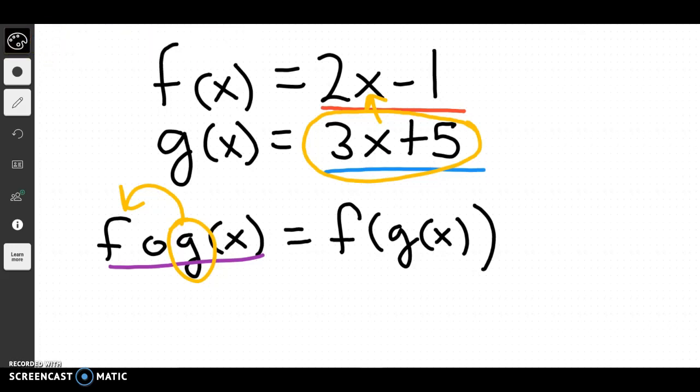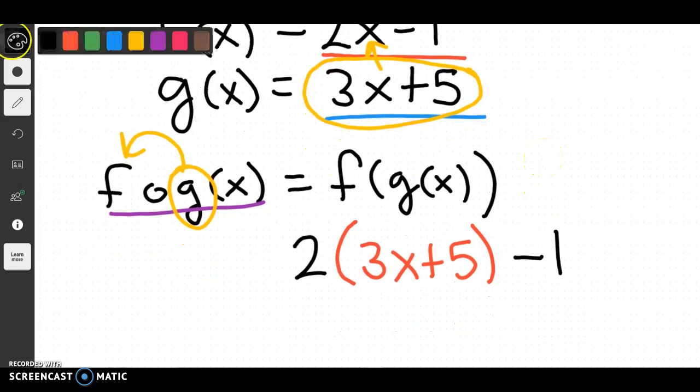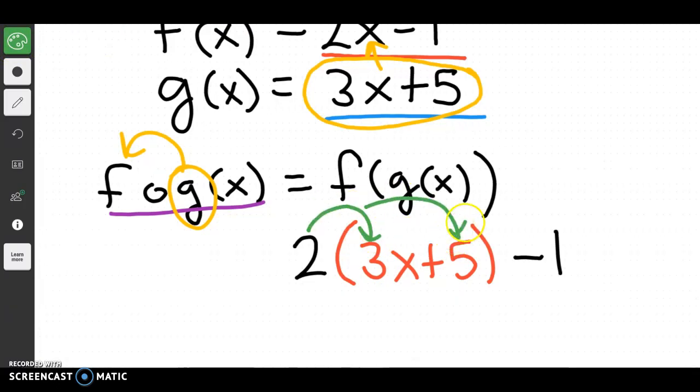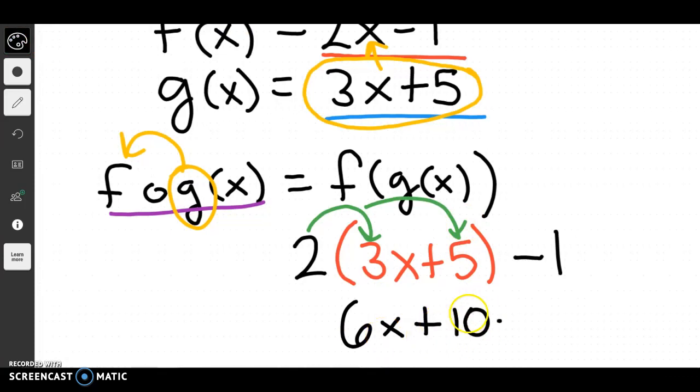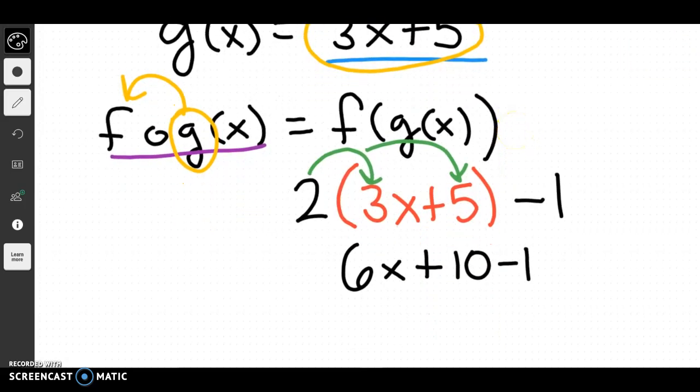This is how it looks when we write it. So we put f as the outer function, which is 2, but instead of writing x, my input is now g, which is 3x plus 5, minus 1. So I put f as my outer function, and I put g inside of f. Now we would just go through and solve. So I could distribute this here and get 6x plus 10, minus 1, which simplifies to be 6x plus 9. And that would be f of g of x.